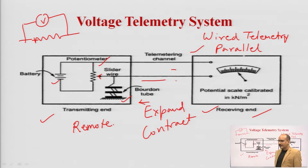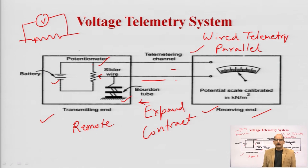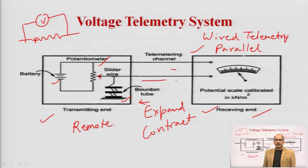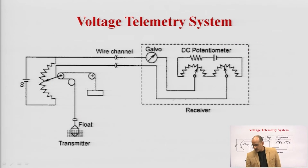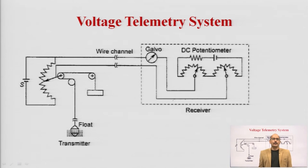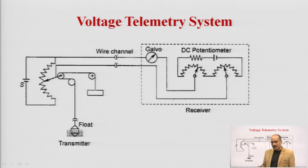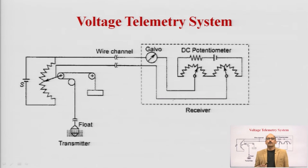In the voltage telemetry system, you convert the physical change into voltage form. As shown with the Bourdon tube example for pressure, it is not always necessary to measure only pressure — you can measure any type of physical quantity using an appropriate transducer or sensor.